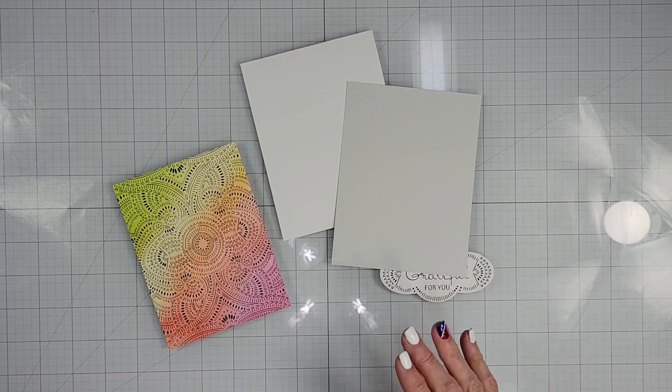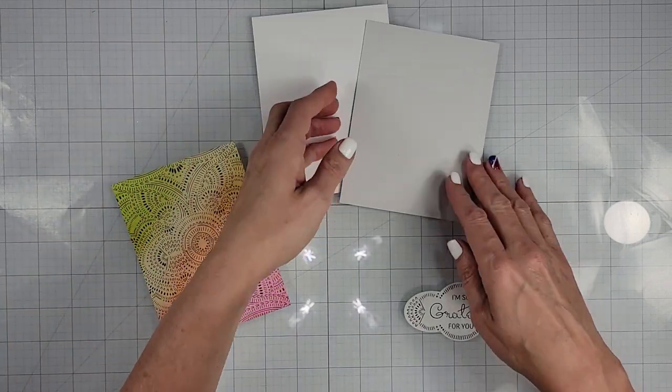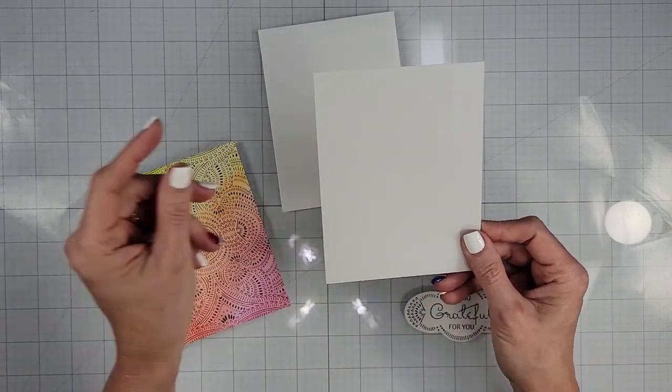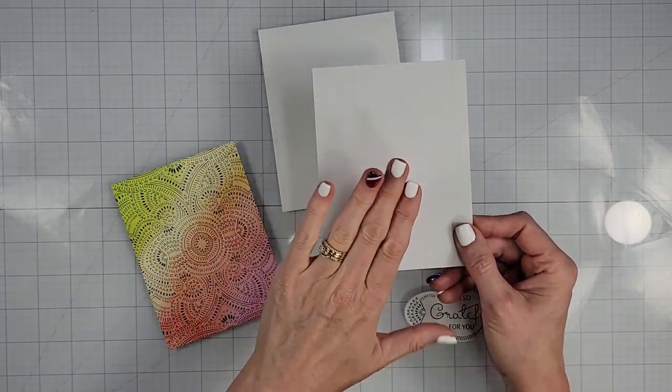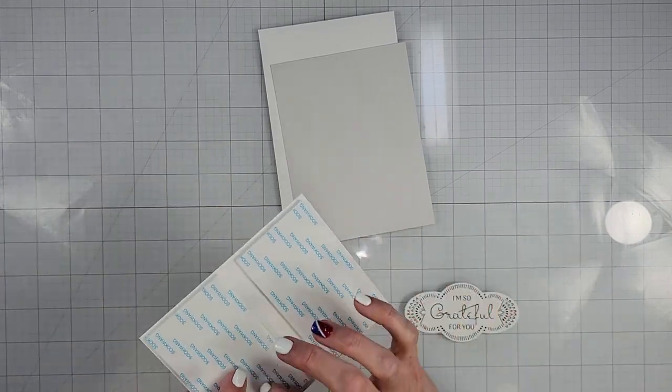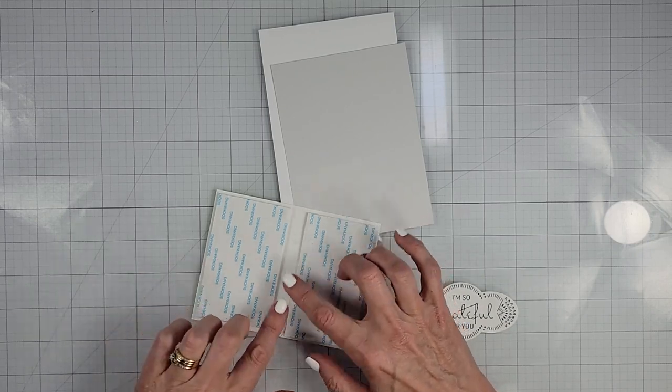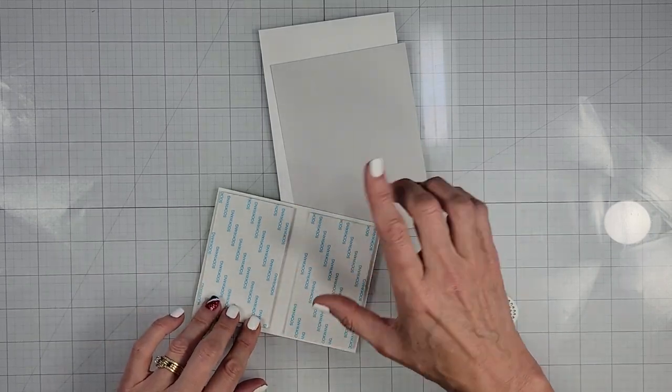Okay, so now that I'm back with you, what I have here is I have a heavy weight top fold card base, a beautiful piece of spellbinders fog cardstock. It's a very light gray. I have already taken and put, I just do fun foam with score tape on it. I already have that on the back and I have an open spot. You'll get what that's for in just a minute.